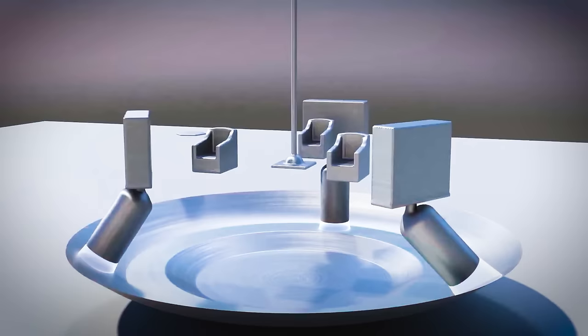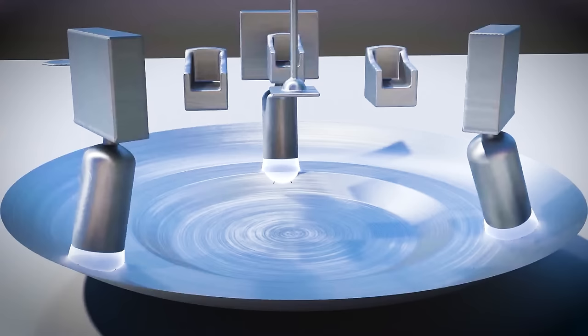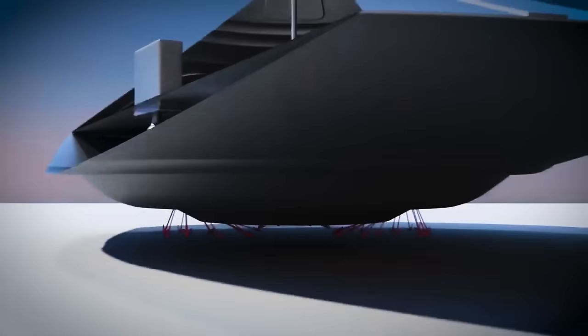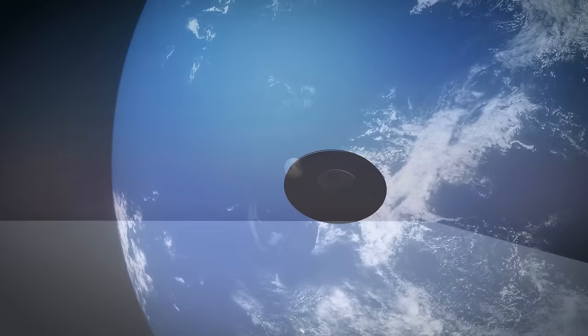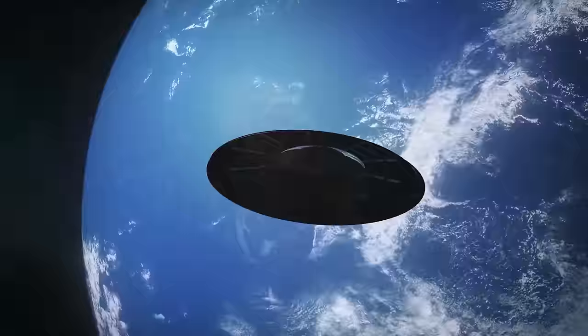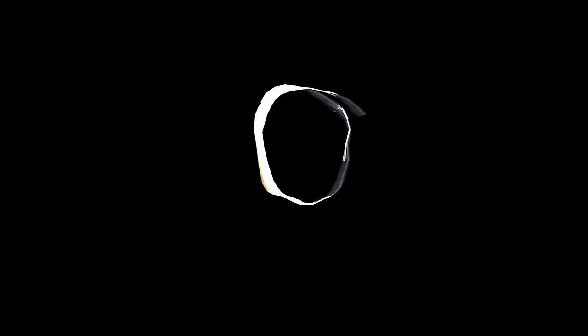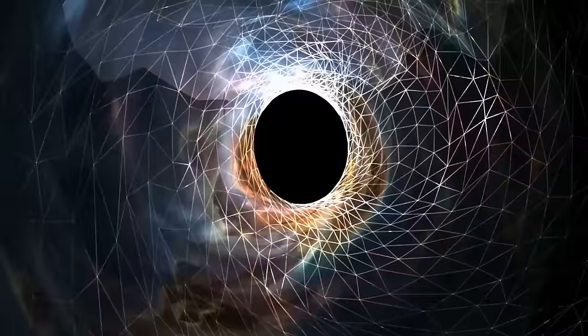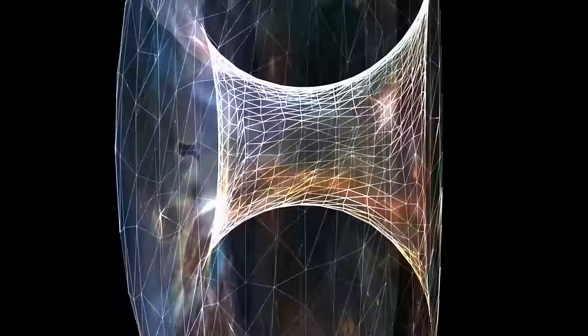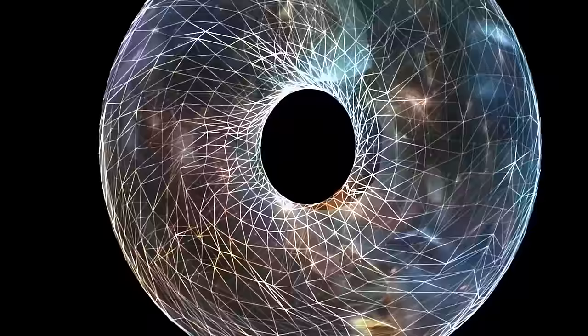But how exactly does this craft move? Enter the gravity amplifiers. Lazar describes these as the linchpins of the spacecraft's navigation, capable of bending gravity to the craft's will. With three of these amplifiers on board, the craft could maneuver with unparalleled agility, hovering, taking off vertically, and gliding in any direction as if the laws of motion were mere suggestions. This isn't just about speeding through space. It's about reshaping the fabric of reality to move from point A to point B. The implications of such technology are staggering, offering a glimpse into a mode of travel that could take us to the stars and beyond. Lazar's accounts, whether you choose to believe them or not, ignite the imagination and challenge us to consider the possibilities that might lie just beyond the edge of our current scientific understanding.